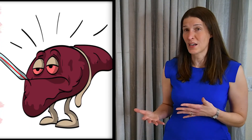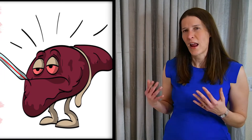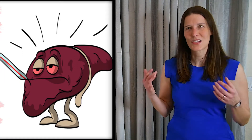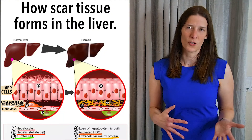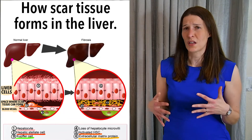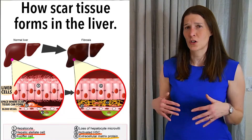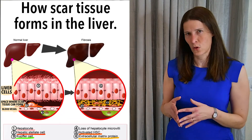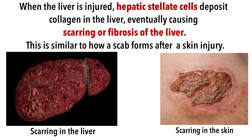When the liver senses that it's inflamed or damaged, it activates hepatic stellate cells. These are specialized cells in the liver that start producing collagen and other proteins, which cause scarring of the liver over time. This process is similar to how a cut in the skin heals by scar formation.